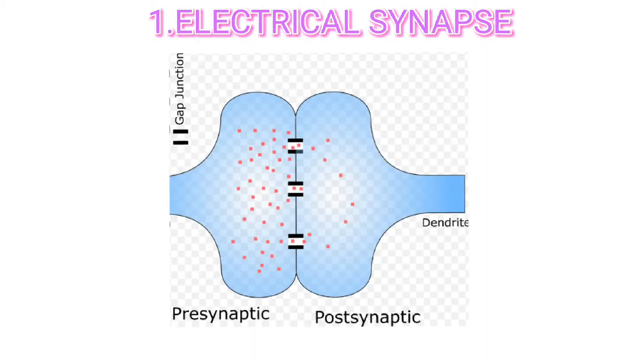Now we'll discuss about the first type of synapse, that is the electrical synapse. At an electrical synapse, two neurons are physically connected to one another through gap junctions. Here, the action potentials conduct directly between the plasma membranes of adjacent neurons through gap junctions.